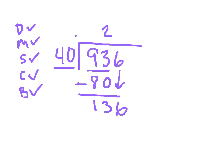You know what? 120. We can get 3 groups out, right? So I'm going to try a 3 here. 3 times 40 is 120. Subtract that. Get 16. 16 is less than 40. Nothing left to bring down. So we have 23 remainder 16. Can you follow that?